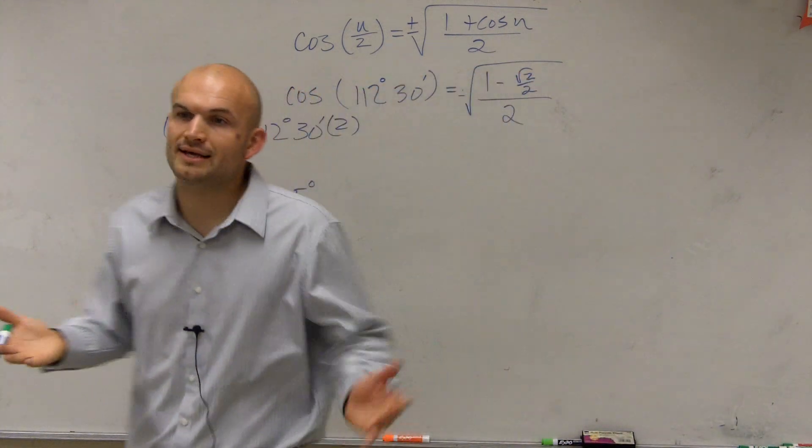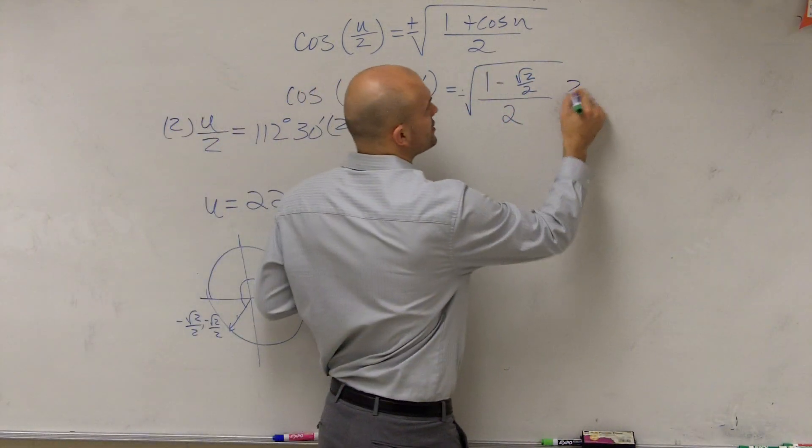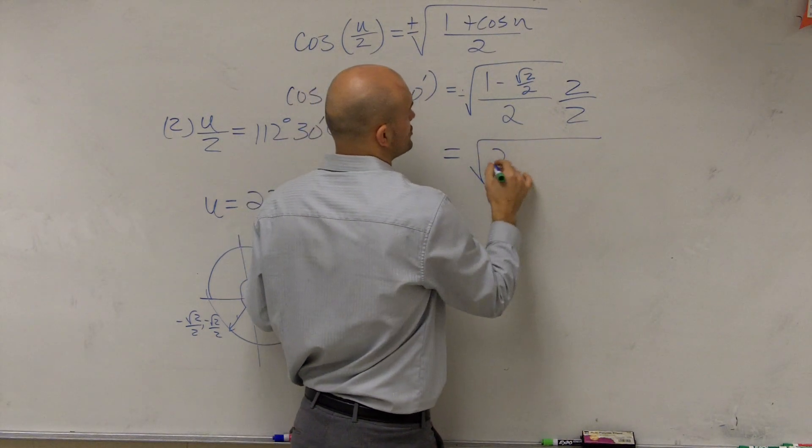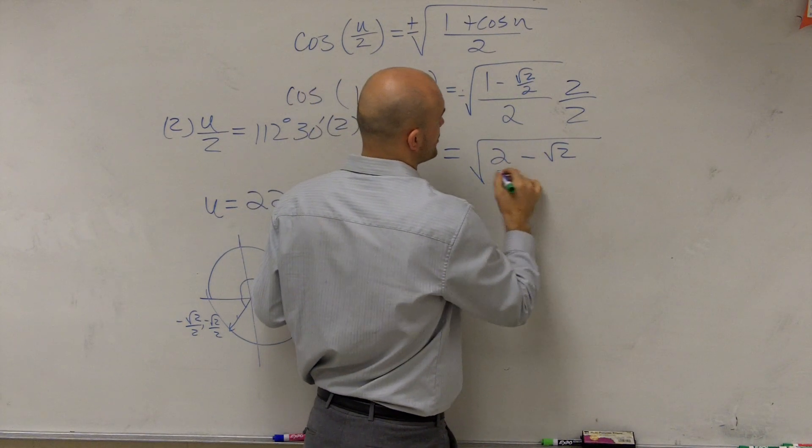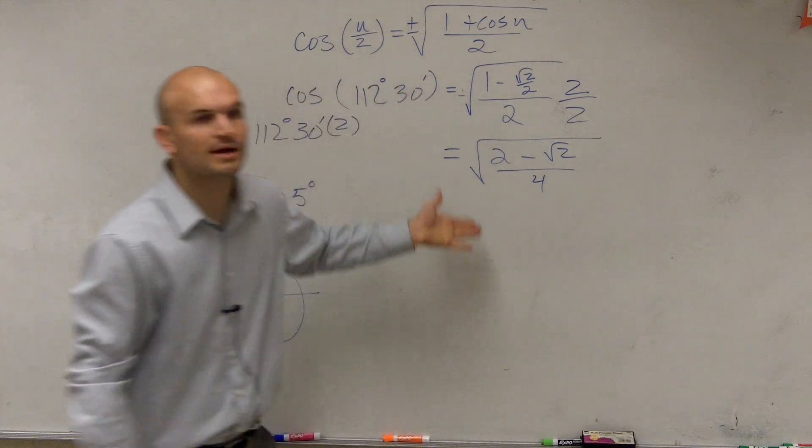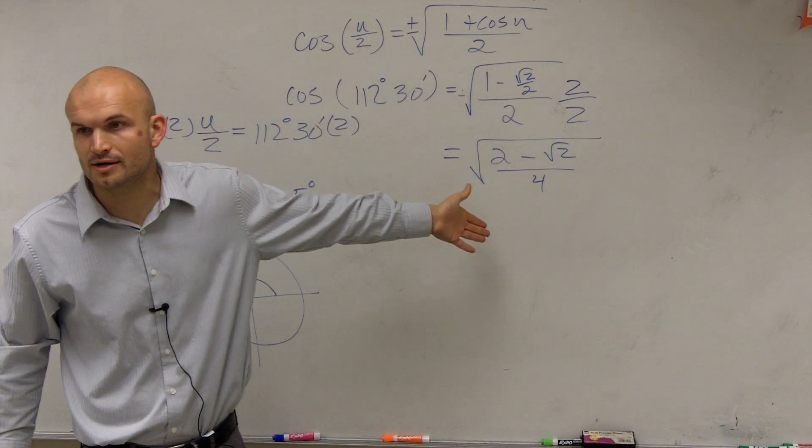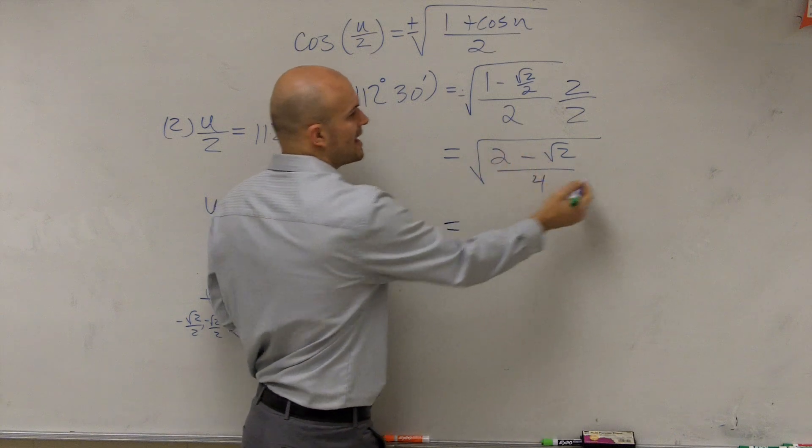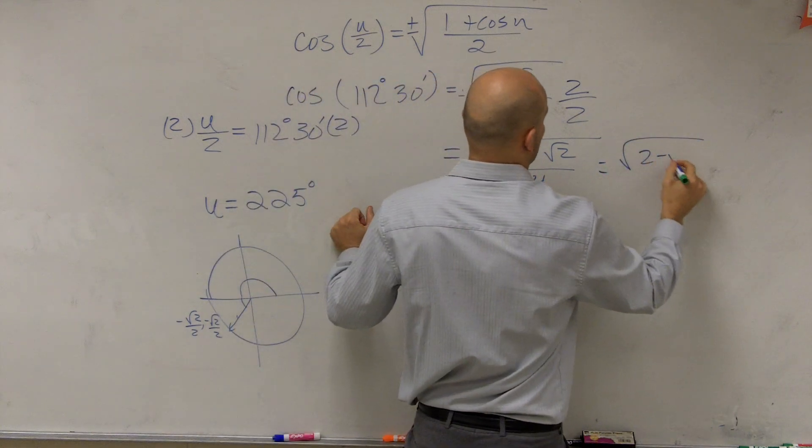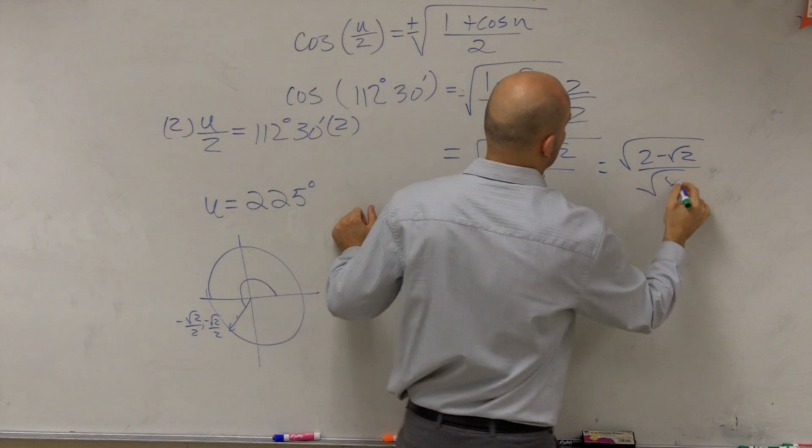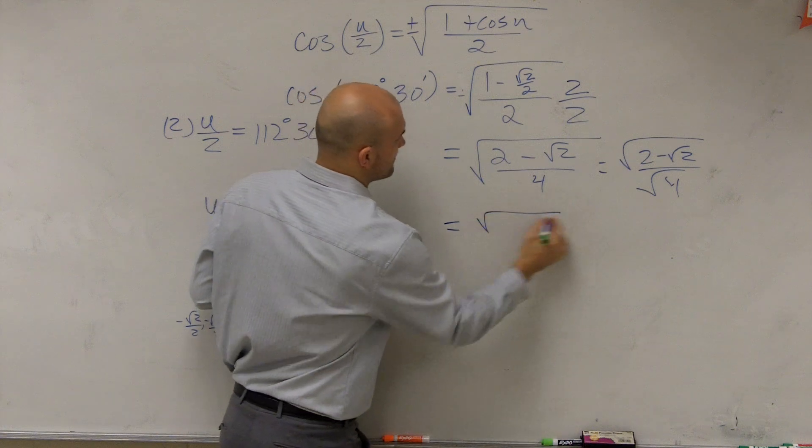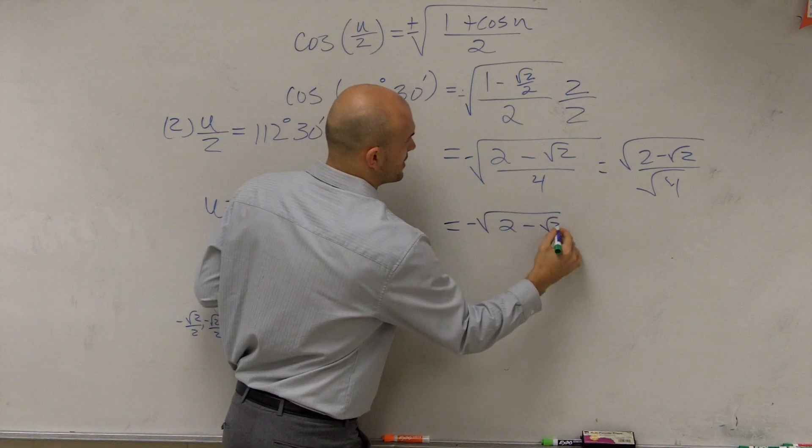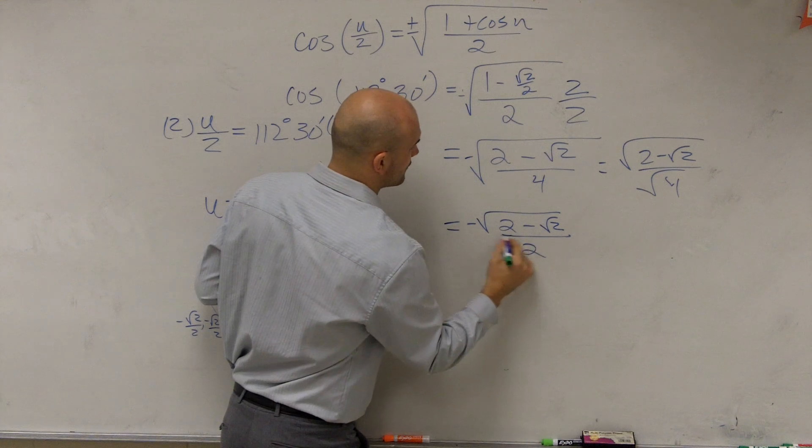So now, again, to simplify this, we multiply by 2 over 2. Therefore, we're going to have now 2 minus the square root of 2 over 4. And can we take the square root of our denominator? Yes. So we apply that. So we break that up into the square root of the top. 2 minus the square root of 2 over the square root of 4, which now provides us with the final answer of negative 2 square root of 2 over all over 2.